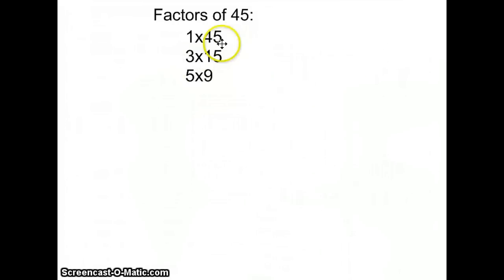They are 1 and 45, 3 times 15, 5 times 9. When I'm doing prime factorization, I cannot use the factors of whatever number I'm working with that include 1. The reason being is because prime factorization is a process to find all of the prime factors of whatever number you're working with. 1 is not a prime number.